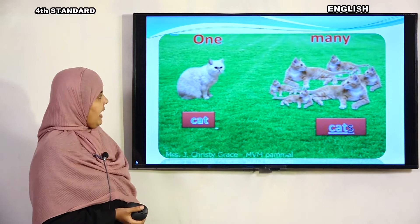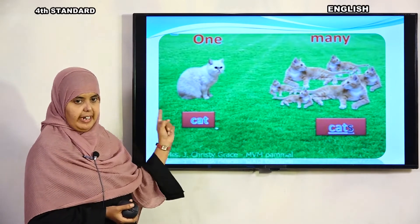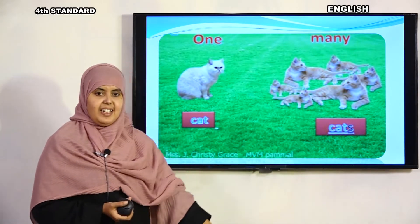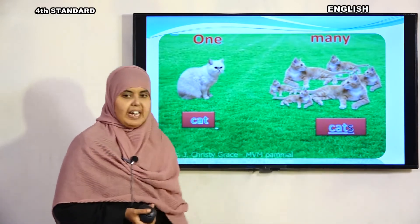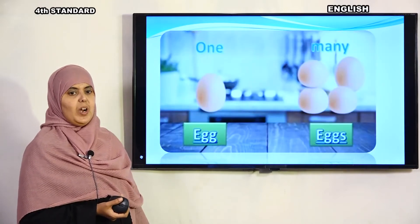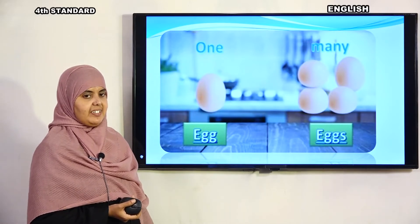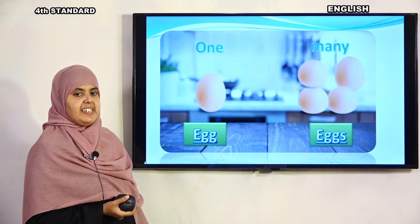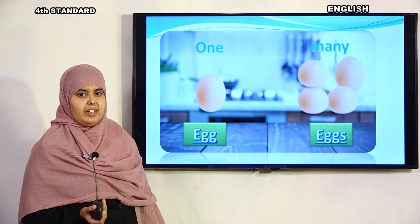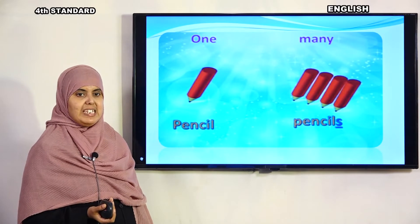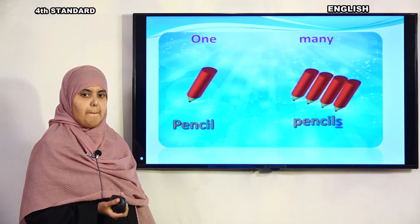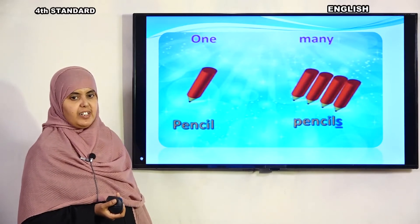Cat — one cat is singular. Many cats — we add 's'. One egg — singular; eggs — we add 's' to make it plural. One pencil — singular; pencils — we add 's'. When there is more than one, we add 's'.